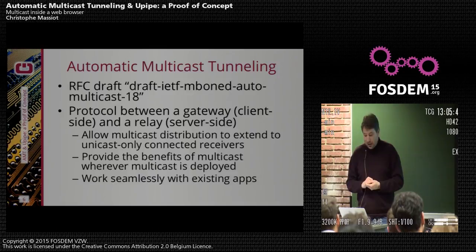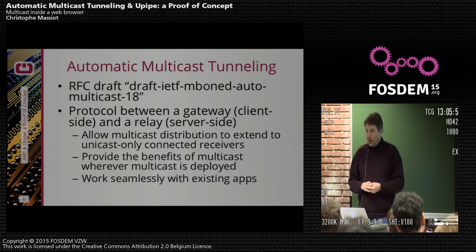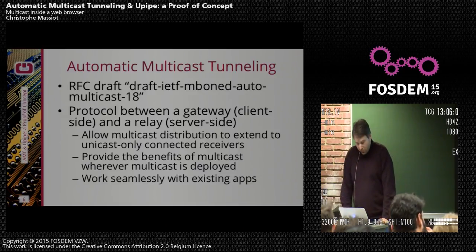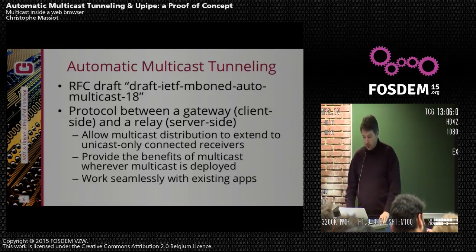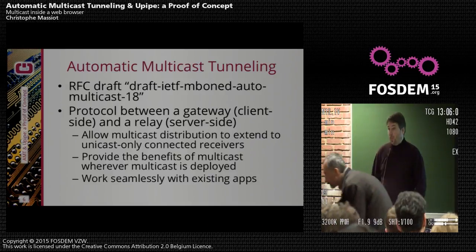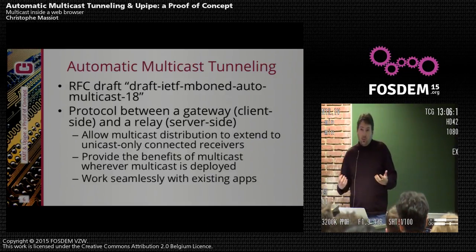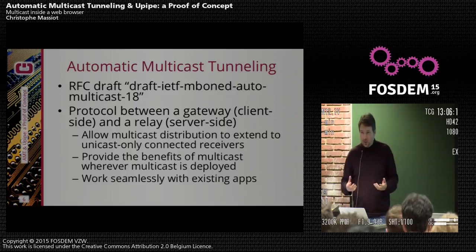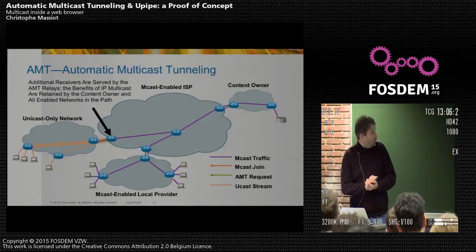AMT is a protocol between a gateway on the client side — close to or in the client — and a relay on the server side. This protocol allows multicast distribution to extend even to unicast-only connected receivers. If you are already on the multicast network, you don't need AMT and have the benefits of multicast. For applications, you don't have to change anything — it works seamlessly.